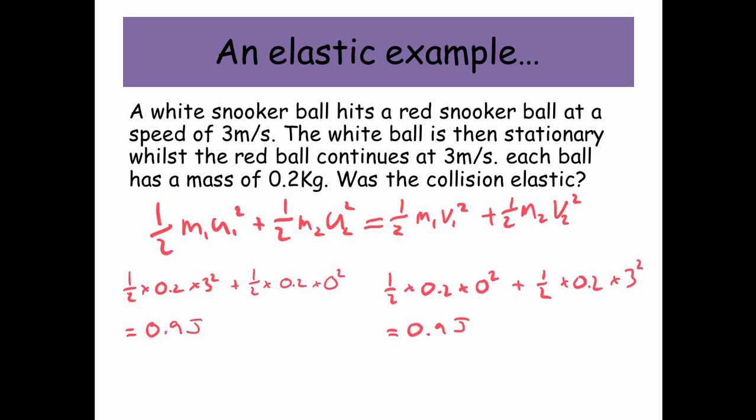And then, well, I told you it was an elastic example, so it's going to work out. A half times 0.2 times 0 squared. The white ball is now stationary, and all the momentum's been transferred to the red snooker ball, and we've got a half times 0.2 times 3 squared, which is 0.9 joules. Same amount of energy to begin with, so therefore we definitely have got an elastic collision.